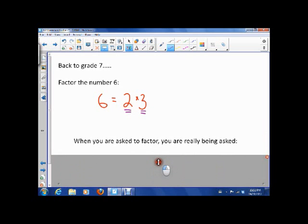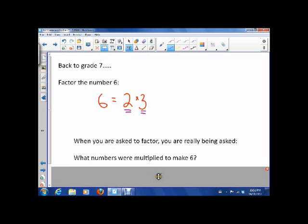So when you're asked to factor really you're being asked to tell me what numbers were multiplied to make the number 6. And your answer is correctly 2 and 3. So 2 times 3 is equal to 6 which means the factors of 6 are 2 and 3.